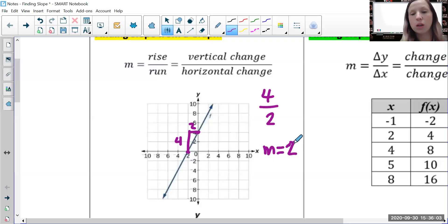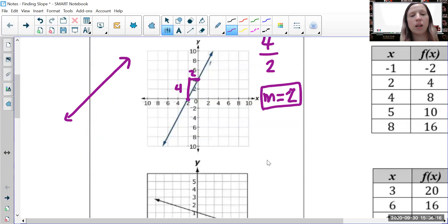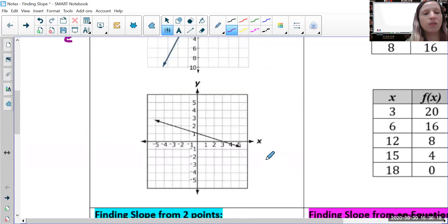That is a positive slope. Lines that go up from left to right have a positive slope. Lines that go down from left to right have negative slopes, so this next line is going to be a negative slope.